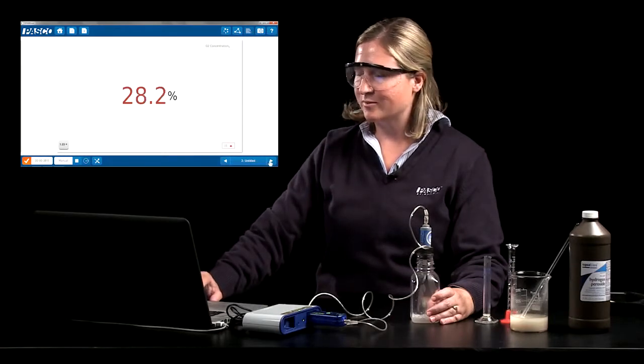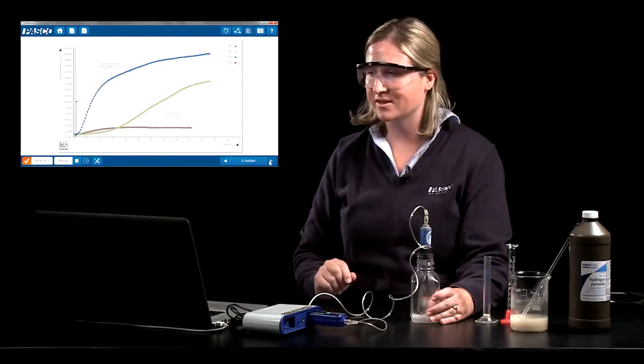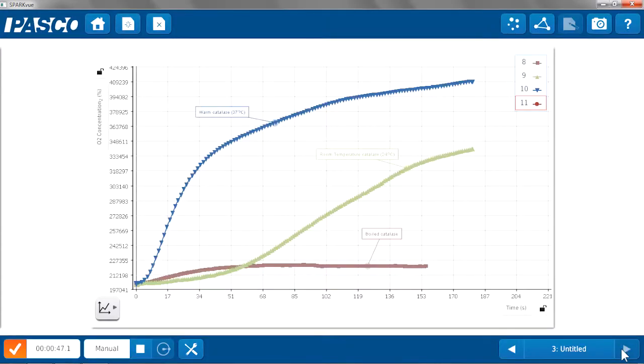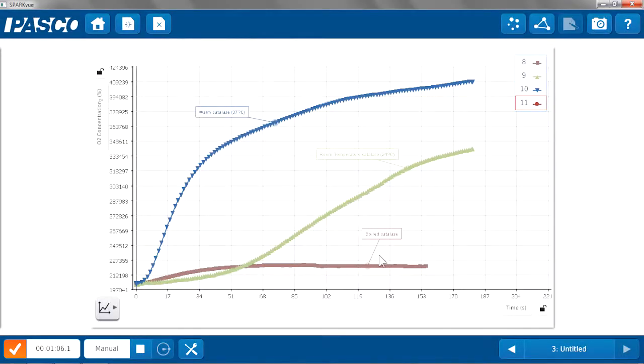I'm going to show you some data that I collected earlier using the same method of small volumes of yeast and hydrogen peroxide in the sample bottle. I compared room temperature catalase at about 24 degrees Celsius in green here to warm catalase at 37 degrees Celsius. Students can do this comparison to see how is the enzyme activity different at their body temperature compared to room temperature. There's also data here for boiled catalase so they can also get evidence of the denaturing of enzymes at extremely high temperatures.